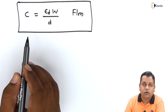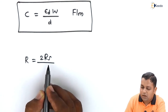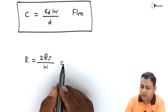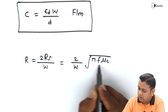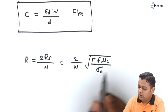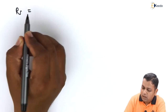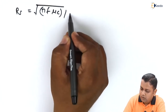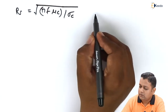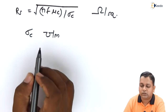Next, the series resistance is represented by capital R, computed as twice the surface resistivity R_S divided by W, which can further be expressed as (2/W) · √(πf · μ_C / σ_C), measured in ohms per meter. The surface resistivity R_S is equal to √(πf · μ_C / σ_C), measured in ohms per square. Here σ_C is the conductivity value of the conductive material, measured in siemens per meter.